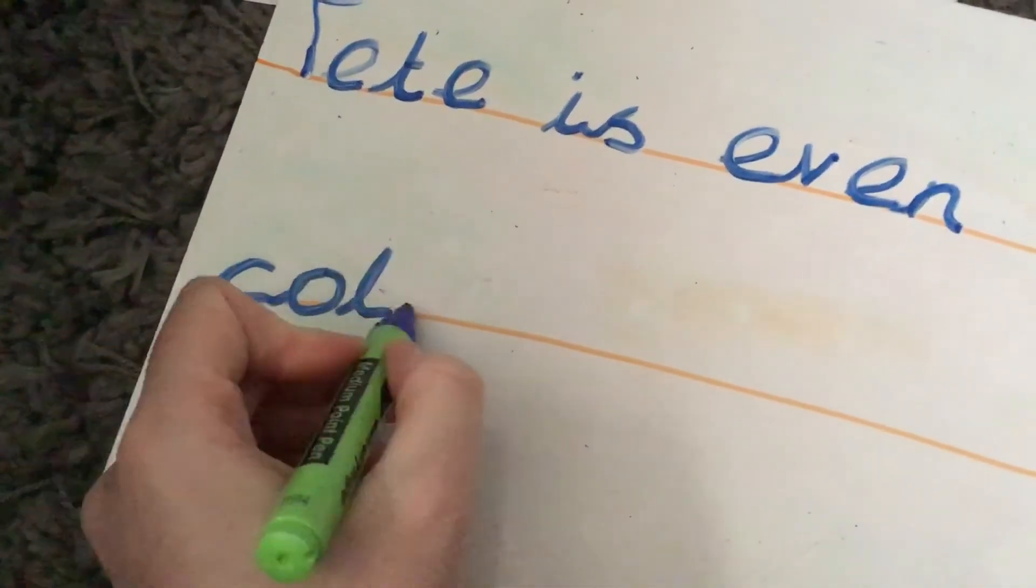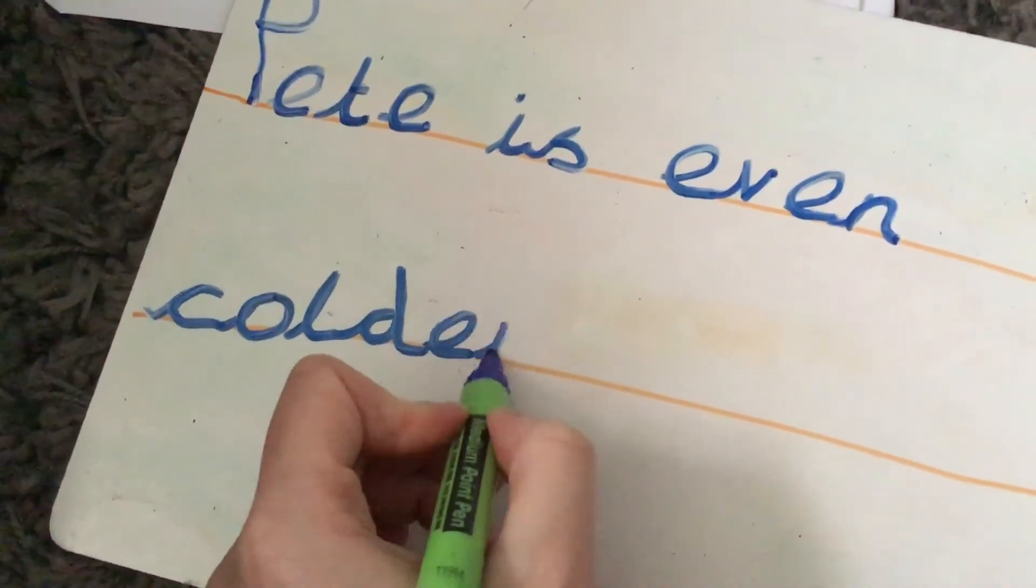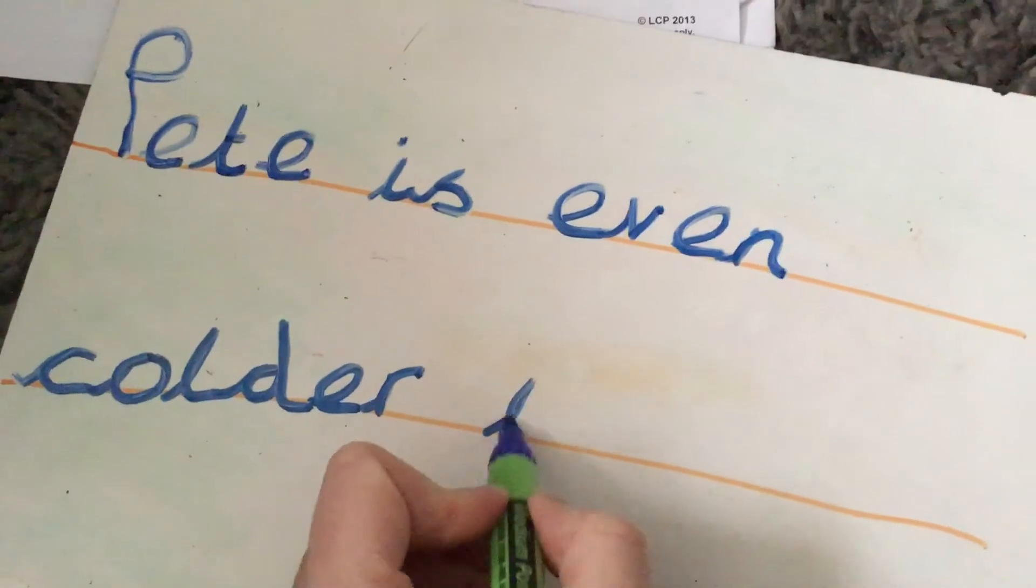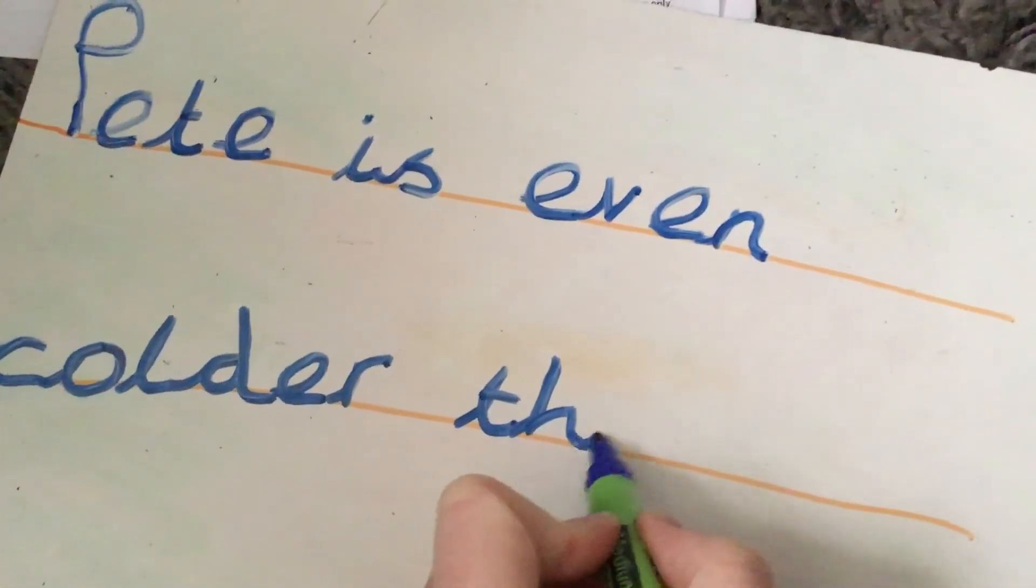Pete is even colder. Cold. We know how to write cold. And then we're going to end it with the ER digraph. Colder. The rude sound because you get to stick out your tongue.